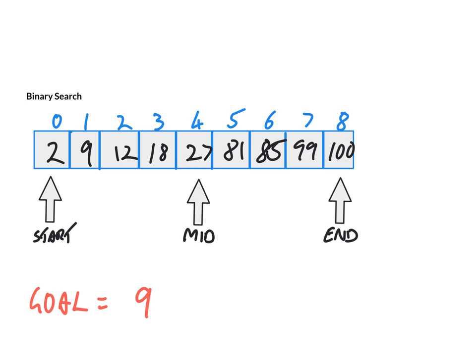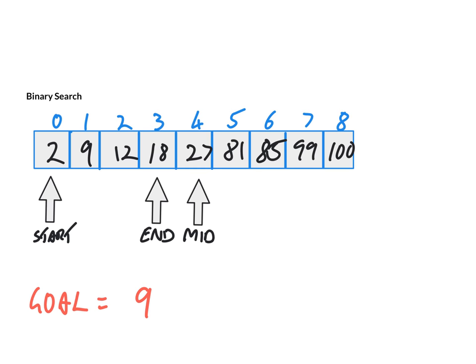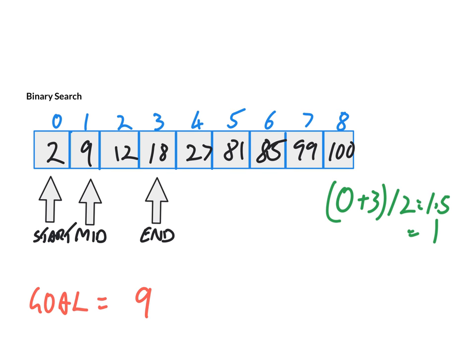In that example the result was to the right-hand side of the midpoint. This time we're going to look at the left-hand side, with a goal state of 9. We calculate the midpoint: 0 plus 8 over 2 equals 4, and the value at position 4 is 27. Our goal state is less than that, so we move our end position down. We recalculate: 0 plus 3 over 2 equals 1.5, which equals position 1. Our new midpoint is position 1, and we've found our goal state.